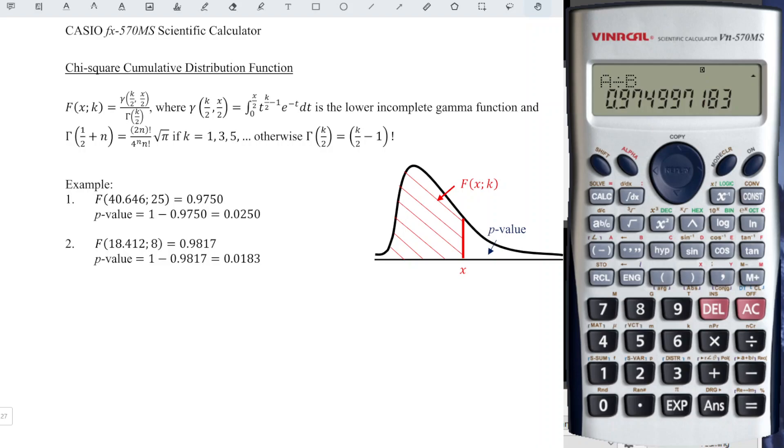And to obtain the p-value, we just have to take 1 minus answer. And we should obtain the correct value as we can see here, which is already rounded to the nearest four decimal places.